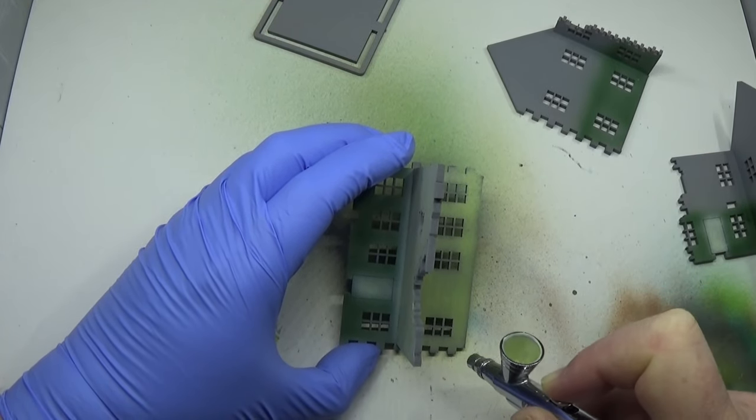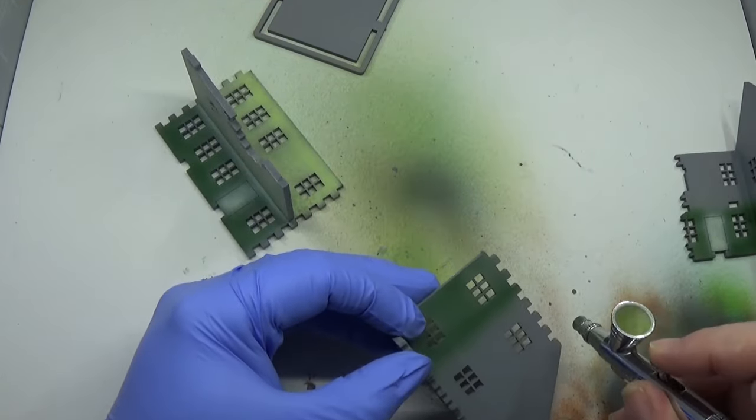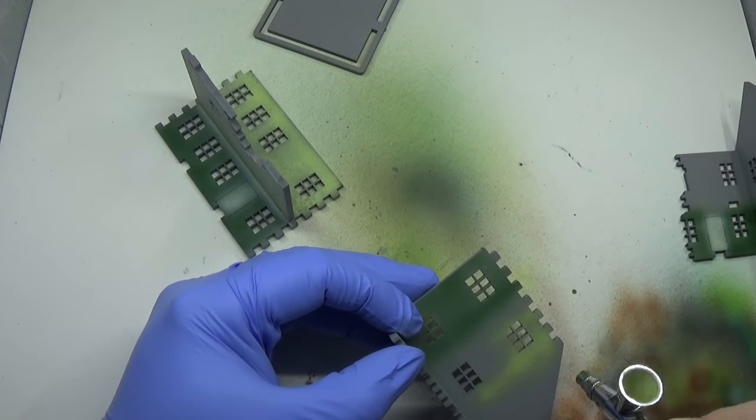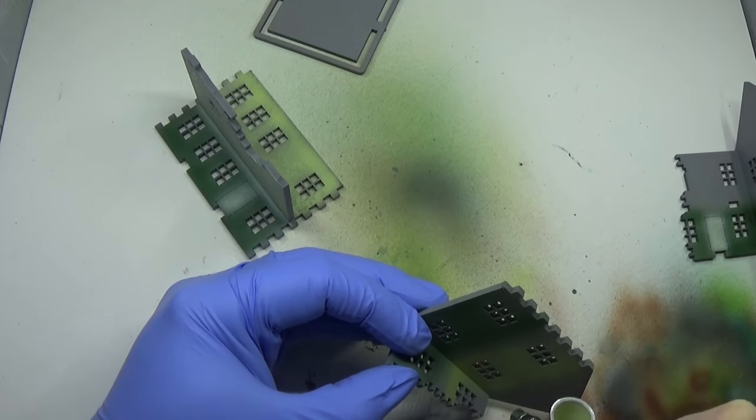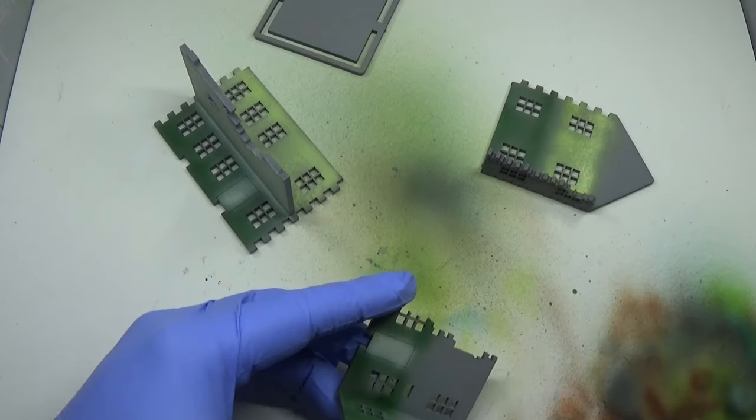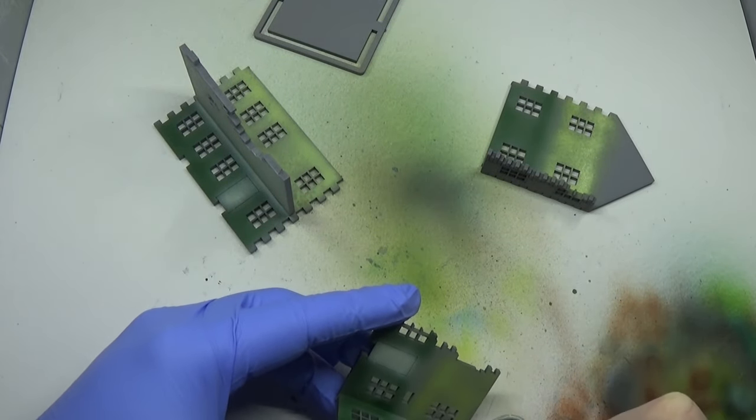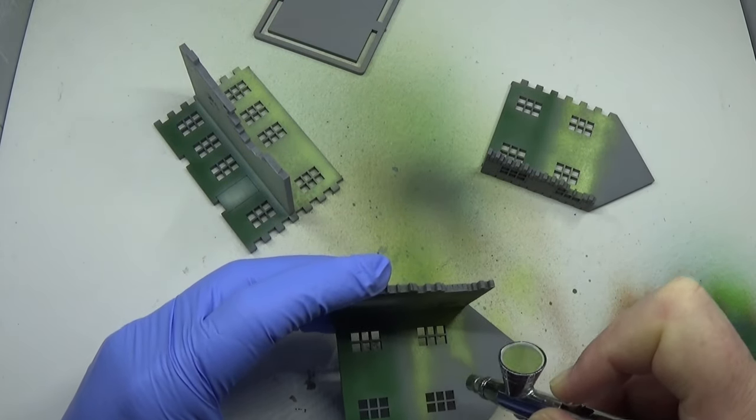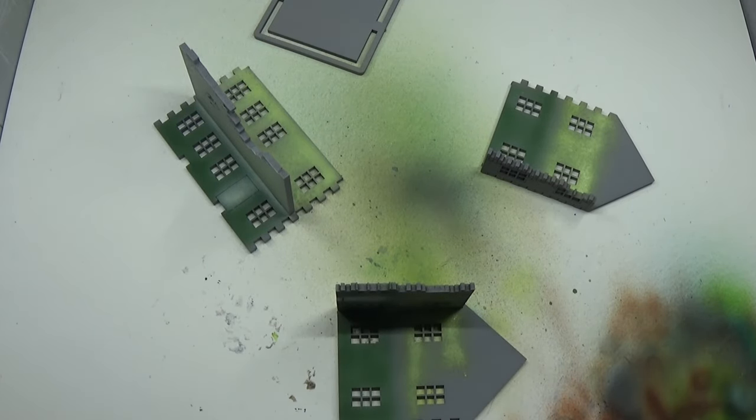As you can see, I'm just using shades of green for this particular building. I like green. If you want to paint them green, paint them green. If you want to paint them blue with orange dots, paint them blue with orange dots. It's not important. As long as they look okay for you on your battlefield, that's all that matters.